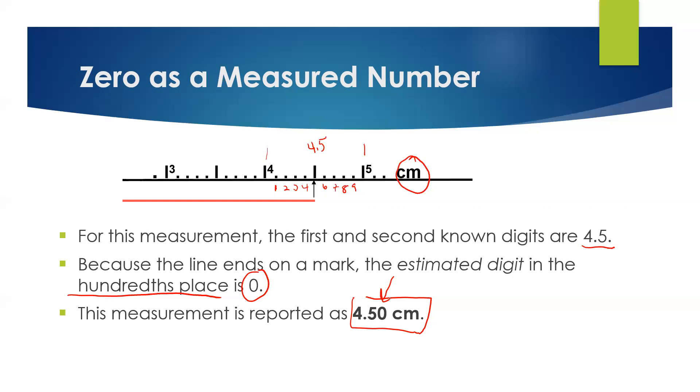Because our graduations went to the tenths, we can go one to the right. That's our estimated doubtful digit, because we can read between graduations. So our graduations are to the tenths, and we should be able to read it to the hundredths place. So this measurement is actually 4.50, zero taking place in the hundredths place.